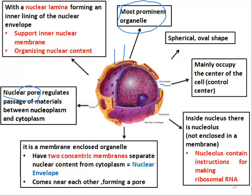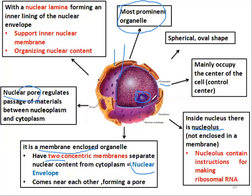To summarize, the nucleus is a membrane-enclosed organelle with two concentric membranes. The outer and inner membranes are separated by an inter-membrane space, forming altogether what we call the nuclear envelope. Where the two membranes come near each other, a pore is formed. Inside the nucleus, there is the DNA and the nucleolus. The nucleolus is a particle — it is not surrounded by a membrane — but it contains instructions to make ribosomal RNA.